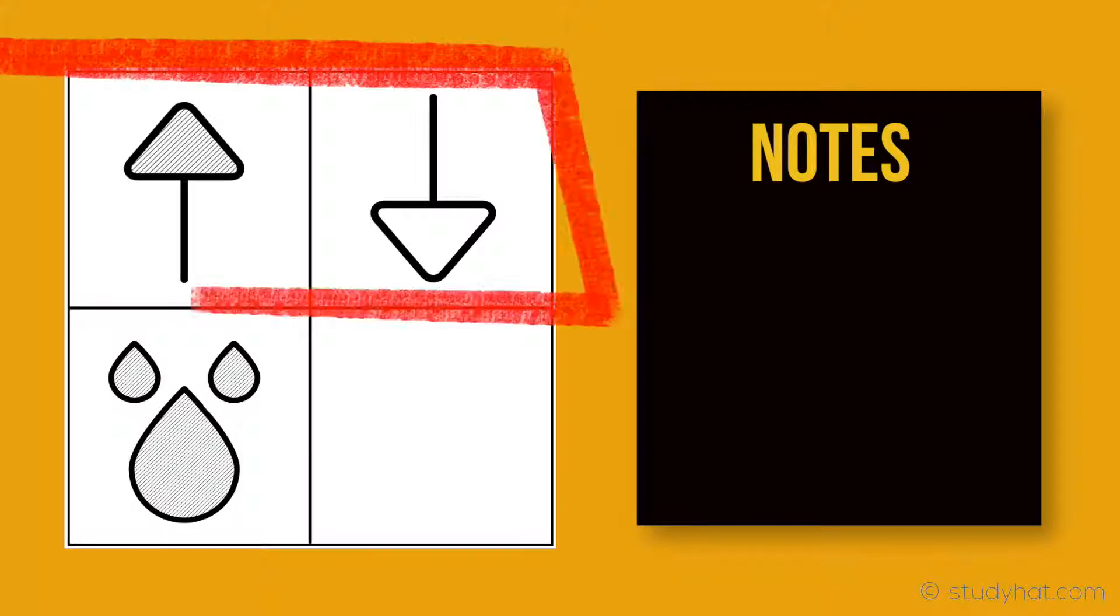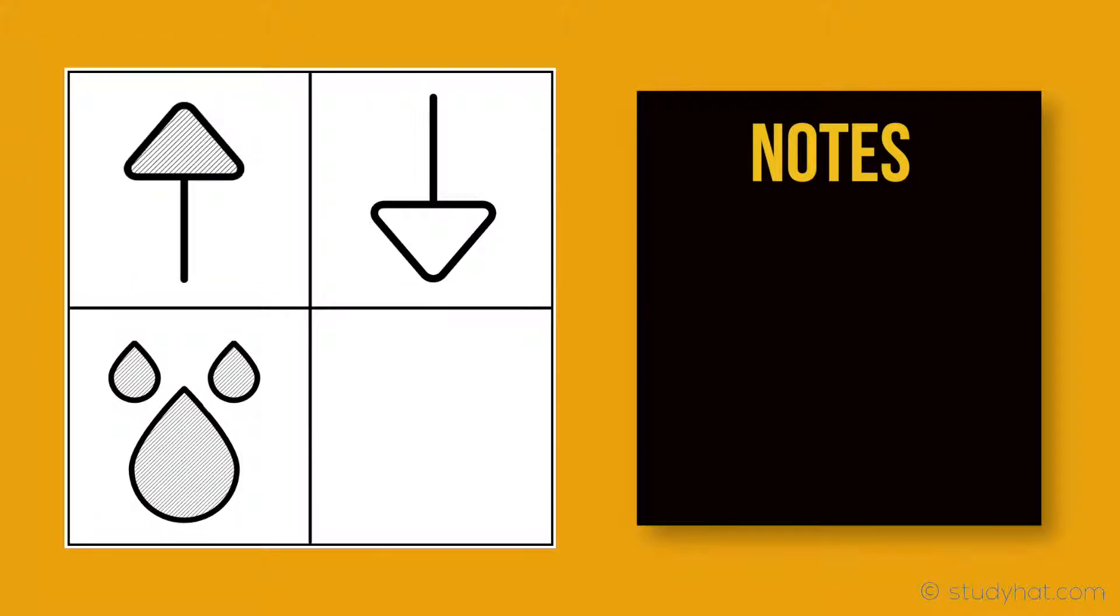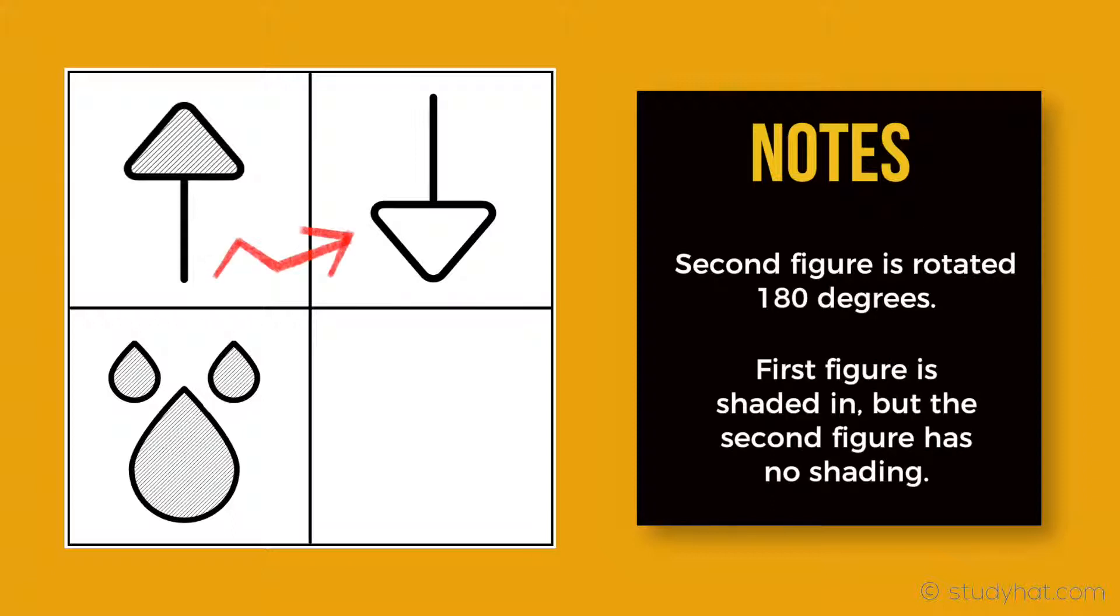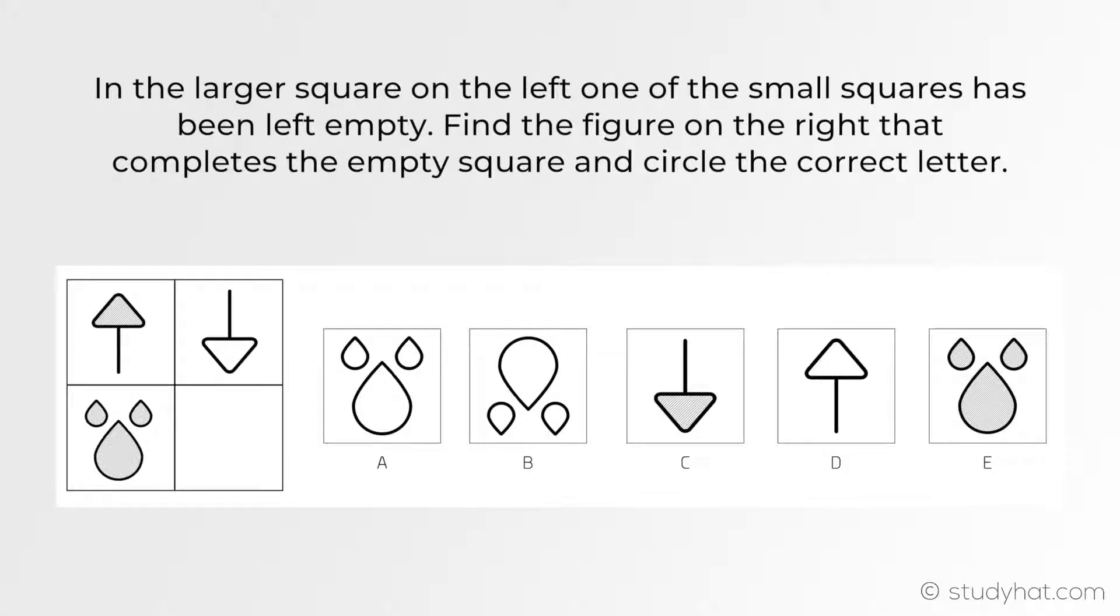If we start looking at what we can see on the top two figures, the first thing I'd note down is that the figure on the left has an arrow pointing upwards that is shaded in. The figure on the right is rotated 180 degrees and has no shading. That's the pattern right there. The figure rotates 180 degrees and the shading is removed. If we apply that to the bottom left, what we need to look for is the figure being rotated 180 degrees and then also remembering that the shading gets removed as well.